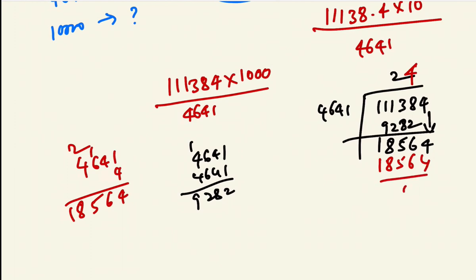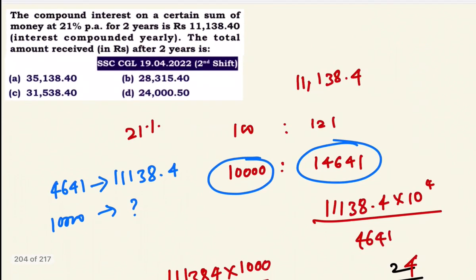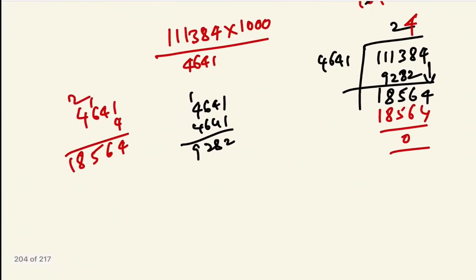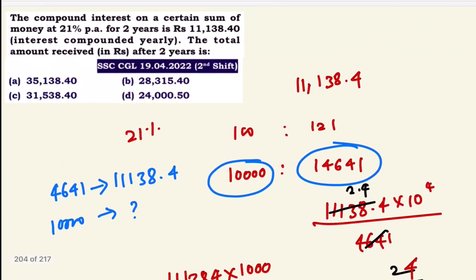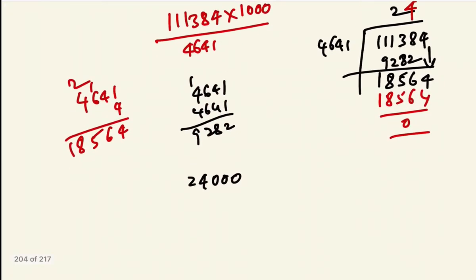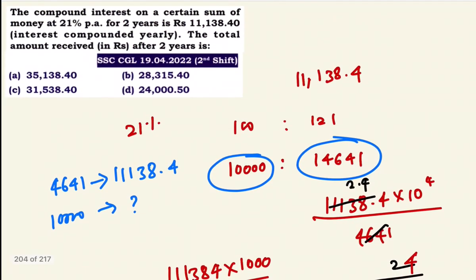Principal is Rs.24,000. Adding the compound interest, the total amount received is Rs.35,138.40. That is Option A — Option A is the answer.